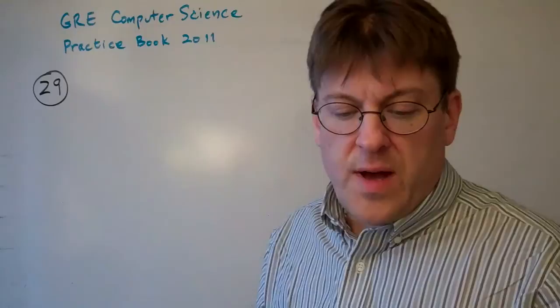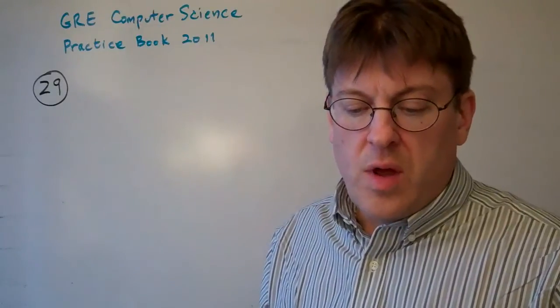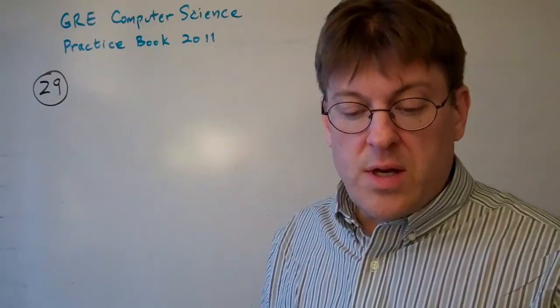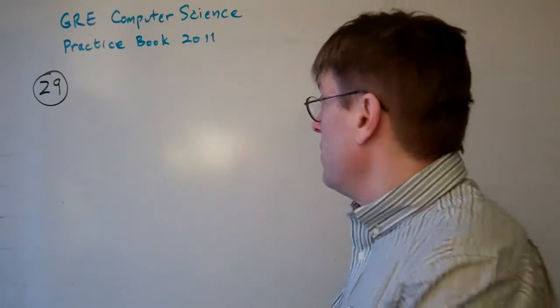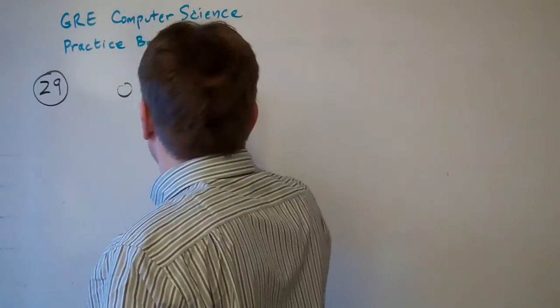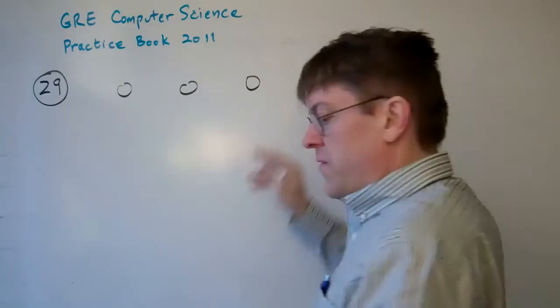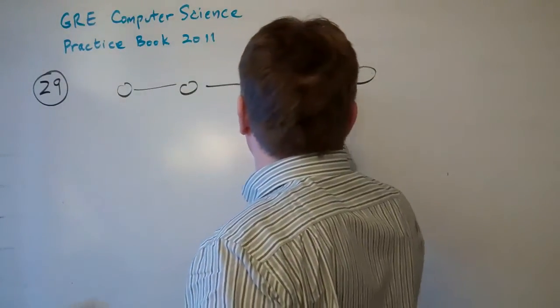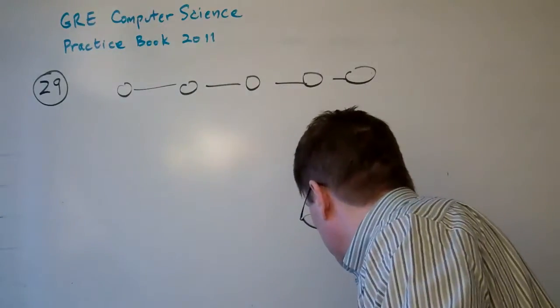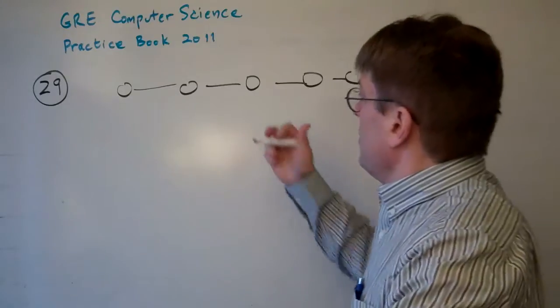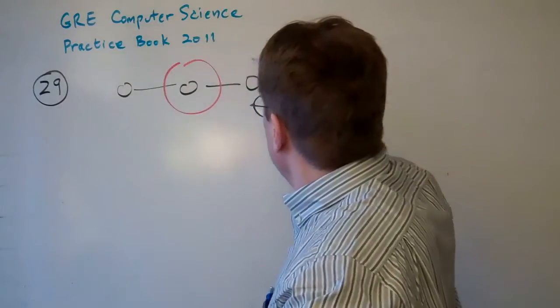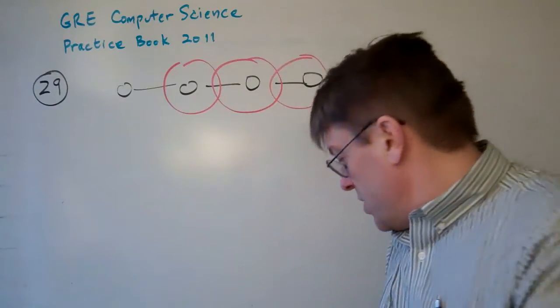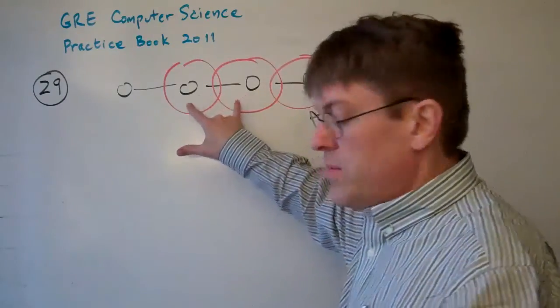Question 29 talks about five wireless nodes arranged in a line where any pair of adjacent nodes are within range of each other and the non-adjacent nodes do not interfere. So we have five nodes here and these nodes are within range of each other but they do not interfere with each other. So basically any two nodes together can communicate.